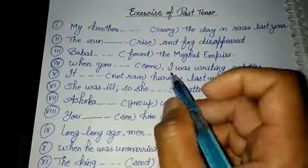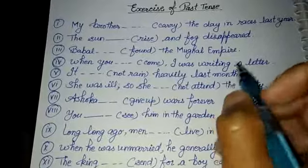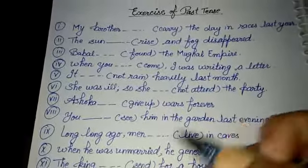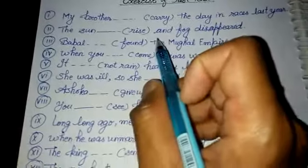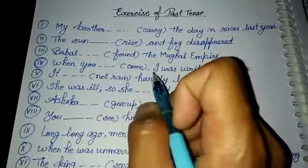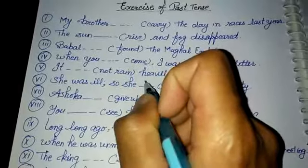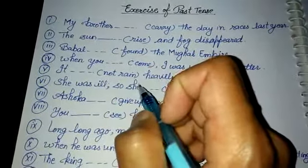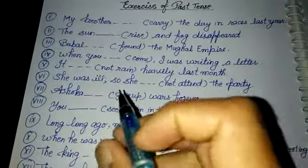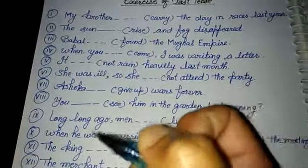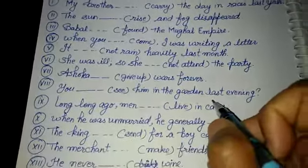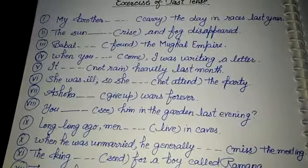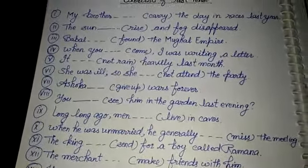I hope past tense is now clear. If you have any doubts, please go to the comment section and comment — let us know what is clear and what is not. Now there is an exercise as homework for you. Write the exercise in your copy. It is related to past indefinite, past continuous, and past perfect tense. Complete the sentences — this is your homework.